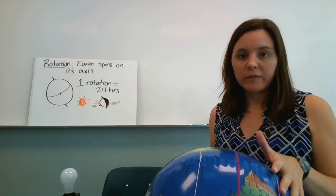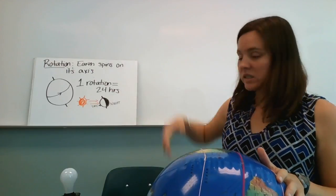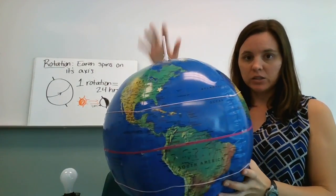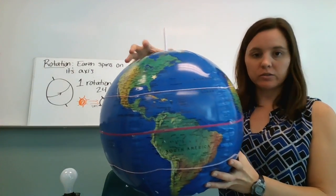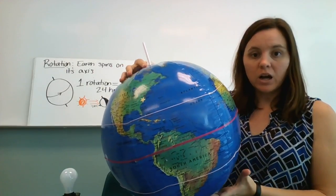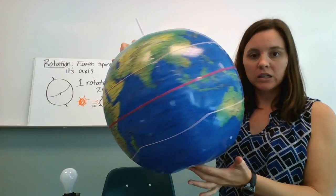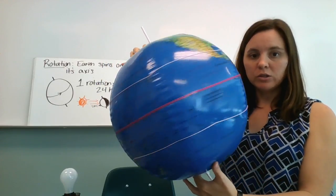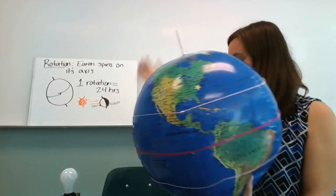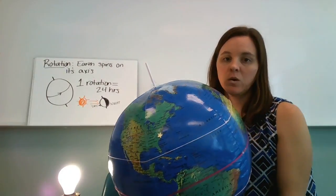So rotation is when the earth spins on its axis. I'm not sure how securely I tape those on there. So it's when the earth just spins around on its axis like this. So now we have the sun here. Whoo, that's bright.